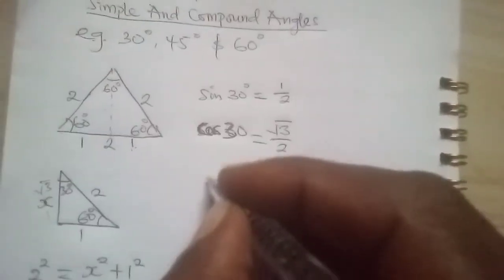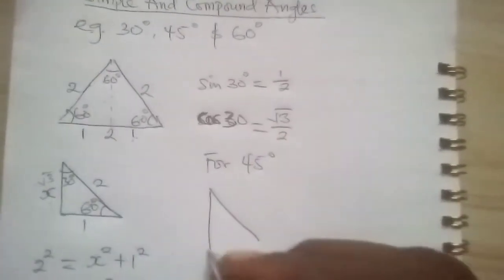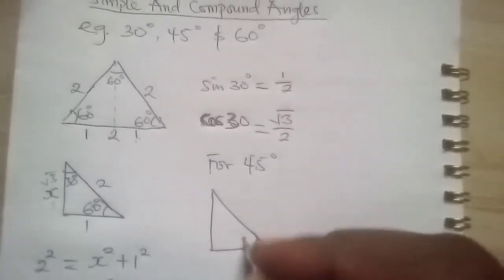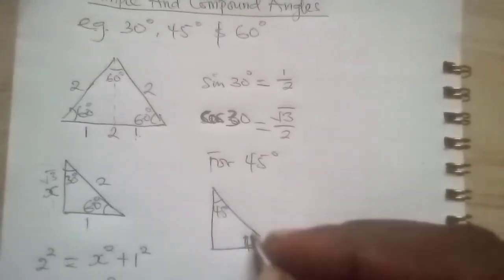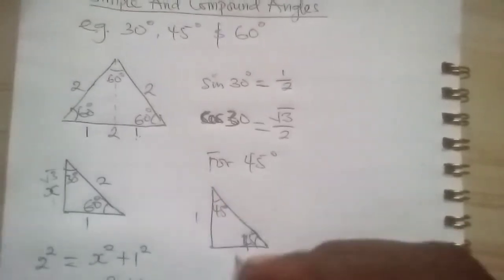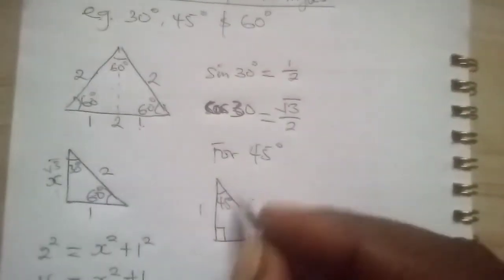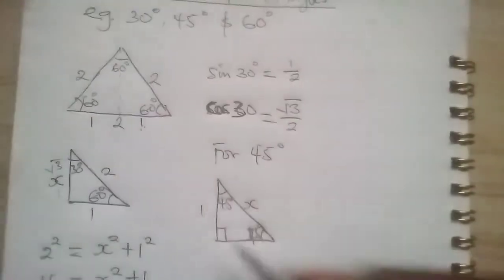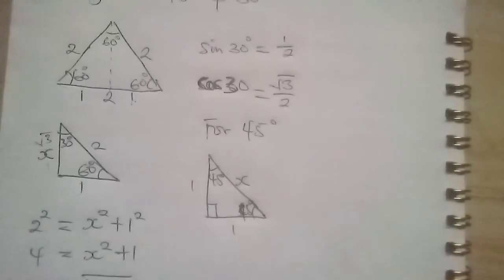So for 45 degrees is different. If we have a right angled triangle, here is 45, here is 45 degrees. Here is 1 and 1. But we don't know what here is. So the sum must be 180. So remember that.